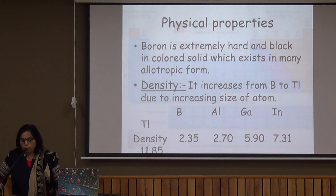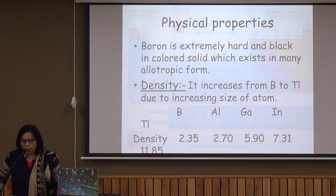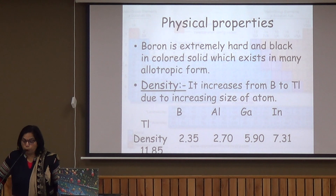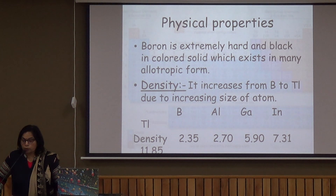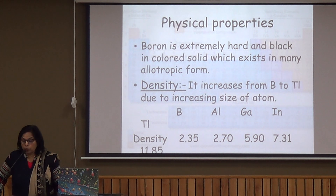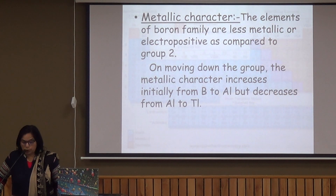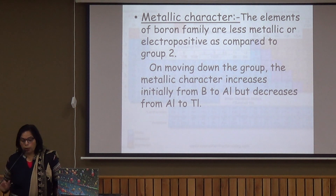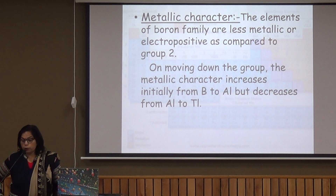Regarding physical properties: boron is very hard because of its small size, and it also shows many allotropic forms. Allotropy means the existence of an element in more than one form. Density increases down the group because atomic mass increases — density equals mass upon volume, so if mass increases, density also increases. The boron family shows less metallic or less electropositive character than previous groups because of their smaller size, but metallic character increases down the group as size increases.